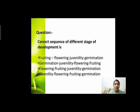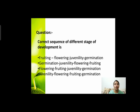Next question: correct sequence of different stages of development? Plant growth और development की stages का correct sequence क्या है? Options हैं: (1) fruiting, flowering, juvenility, germination; (2) germination, juvenility, flowering, fruiting; (3) flowering, fruiting, juvenility, germination; (4) juvenility, flowering, fruiting, germination।